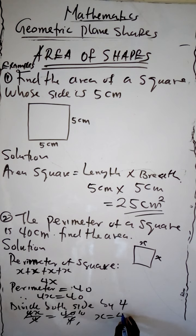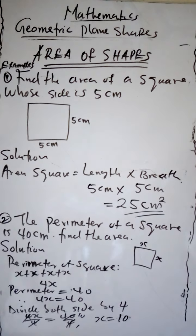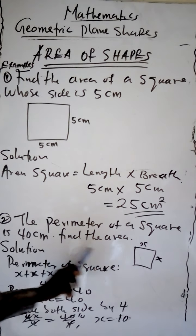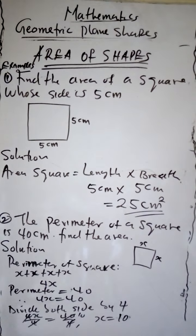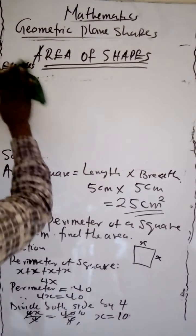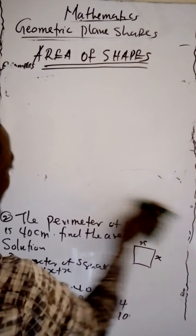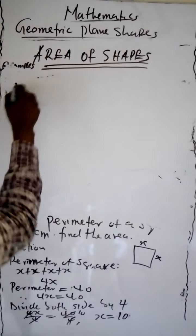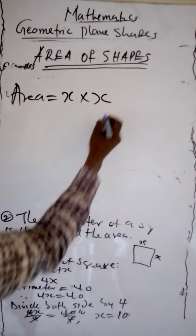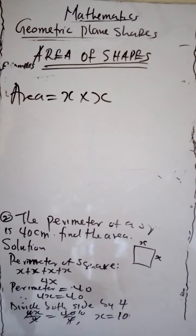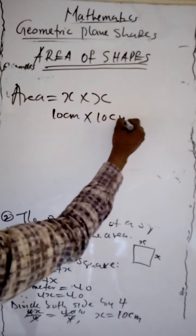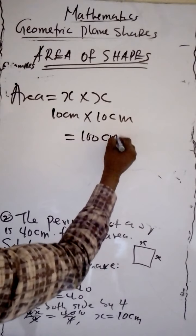Our x equals 10. Now if our x equals 10, the question asks us to find the area. To calculate the area, it is x times x — length times breadth. So the area of the square is 10 cm times 10 cm, which gives us 100 cm squared.